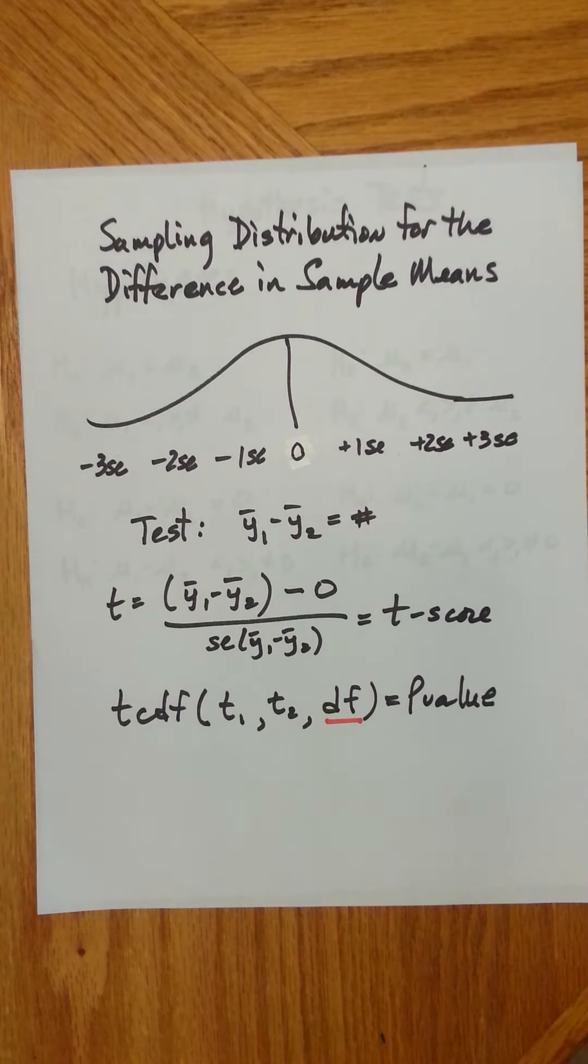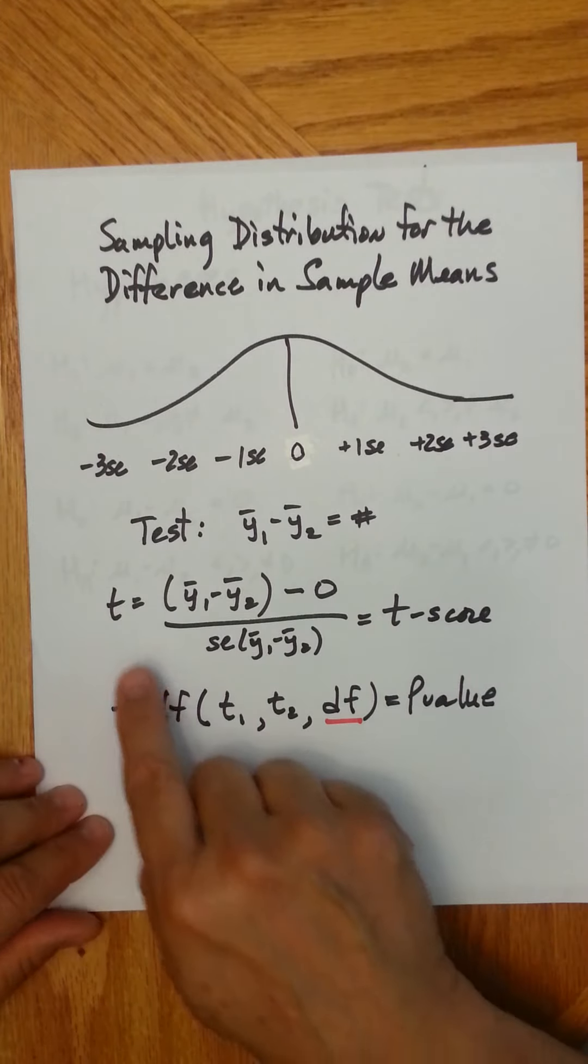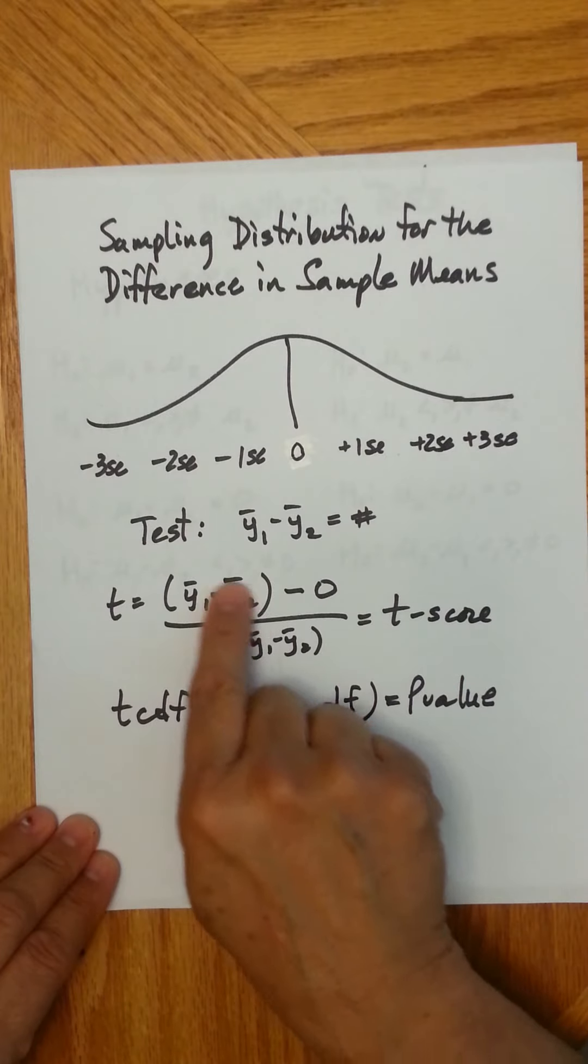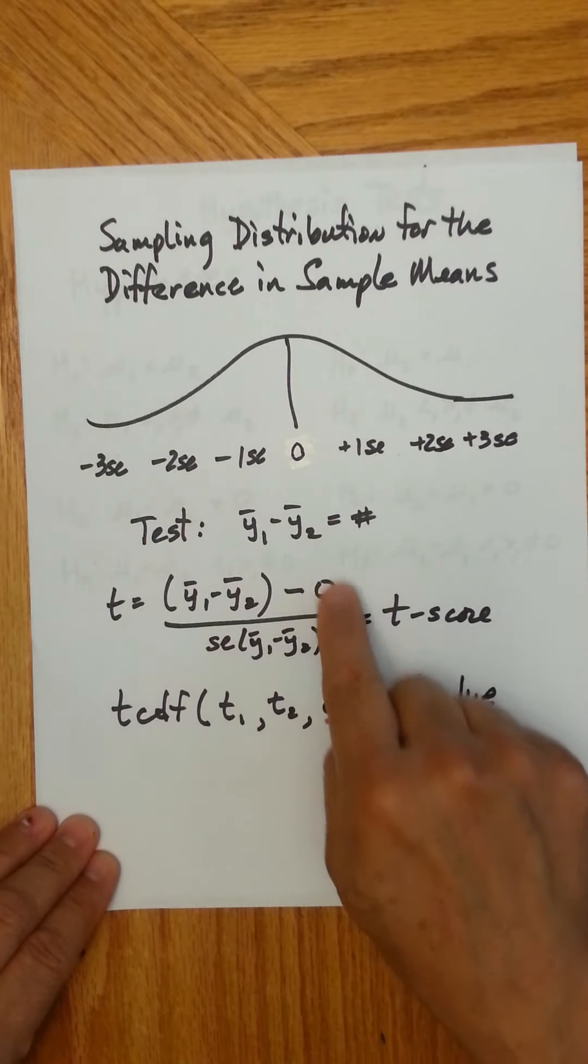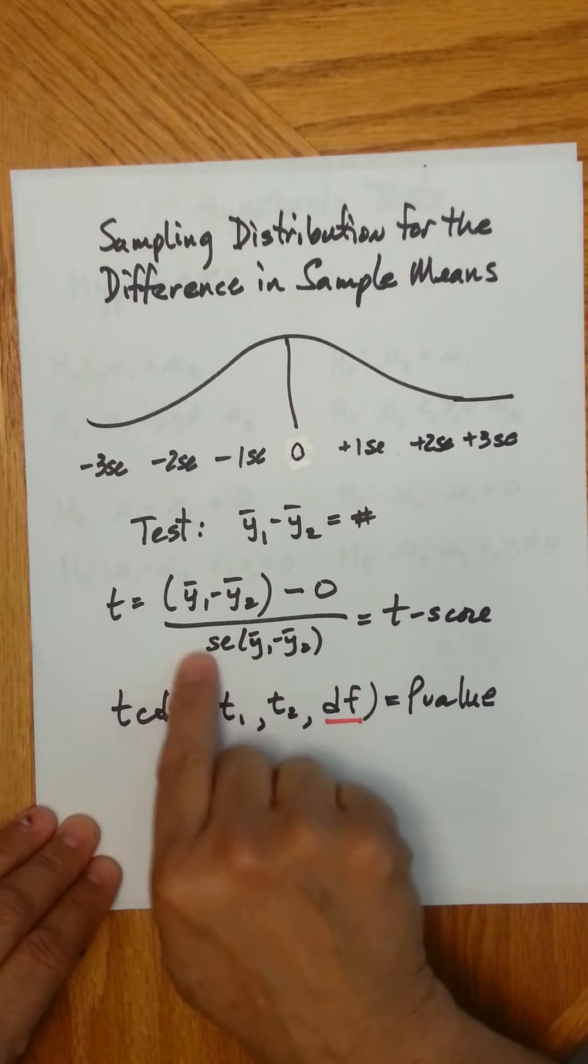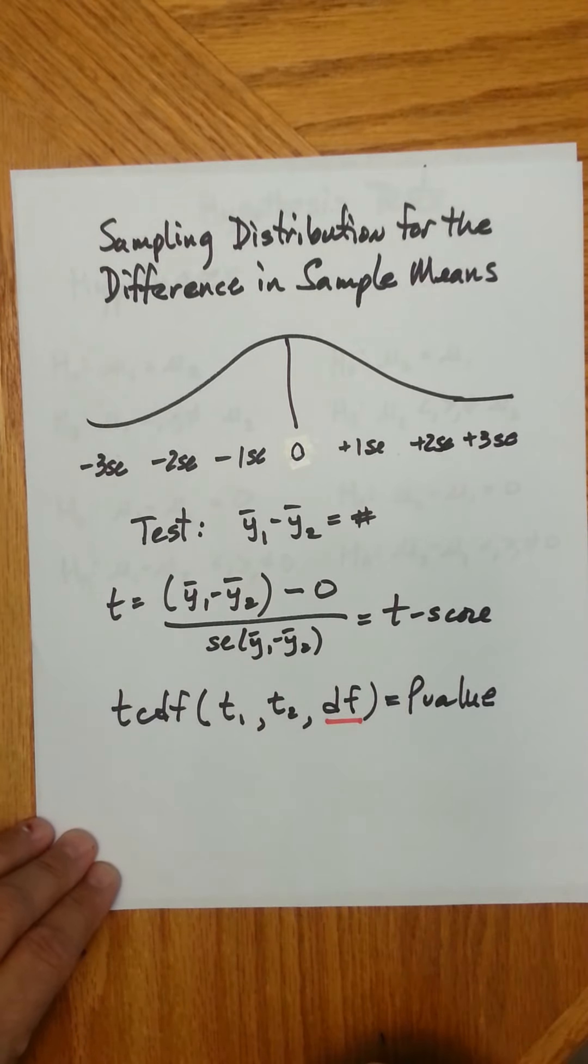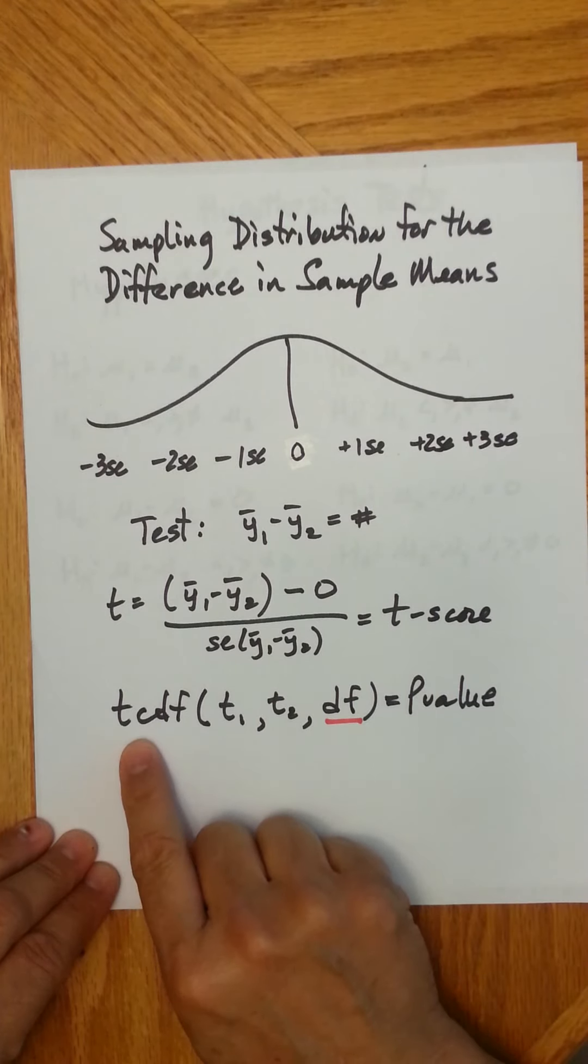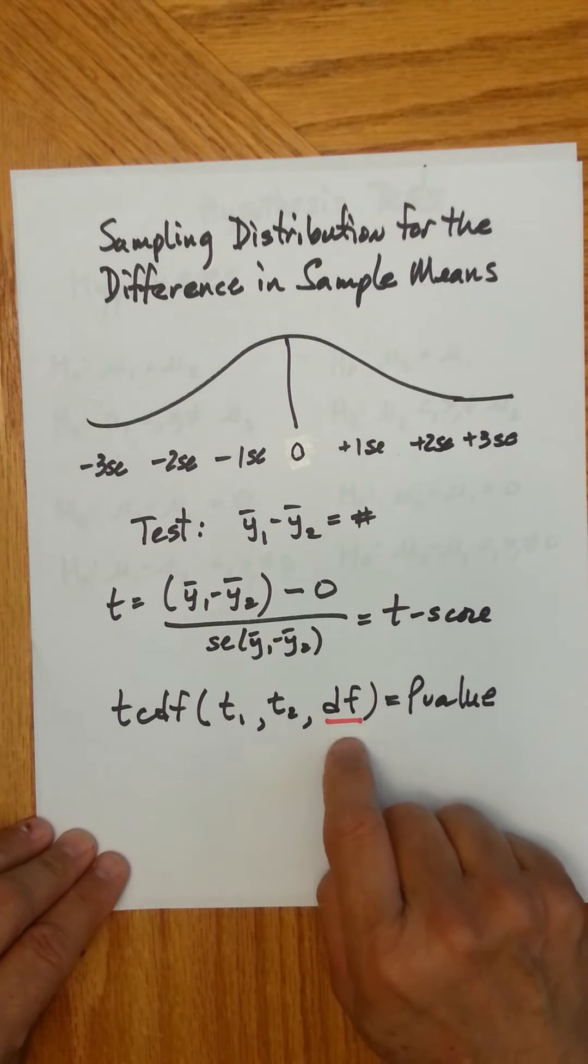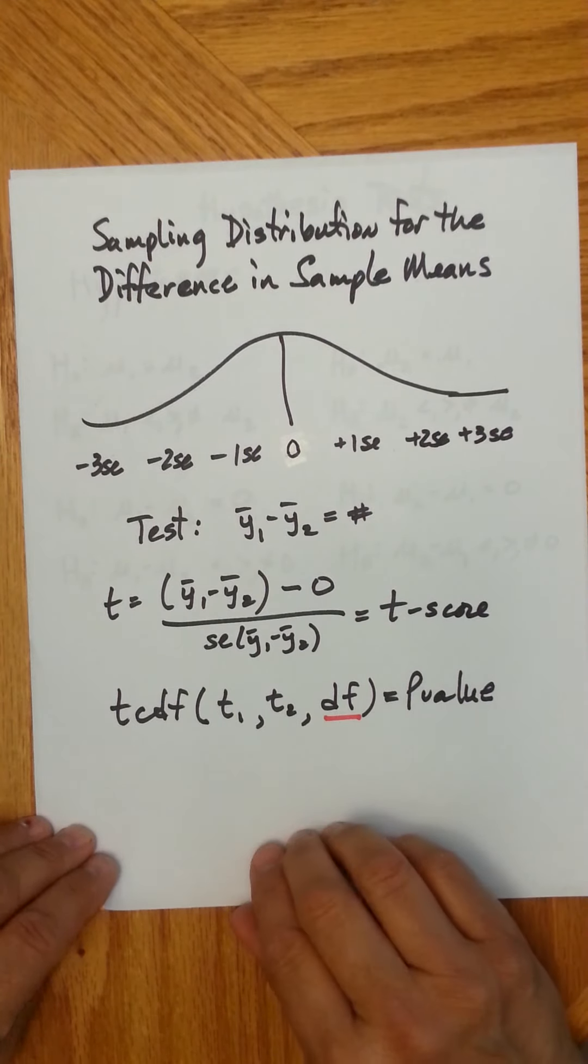The way you establish all this is you find the t-score for this difference in sample means. This difference, how far is this difference from zero, the mean of the distribution, how far is this difference from zero, standardized, that gives you your t-score. Then you find your p-value by going into your calculator, putting into tCDF from the lower t-score to the upper t-score, and the degrees of freedom so that the calculator knows which t-distribution I'm supposed to be working with. And out comes your p-value.